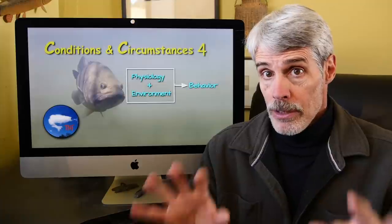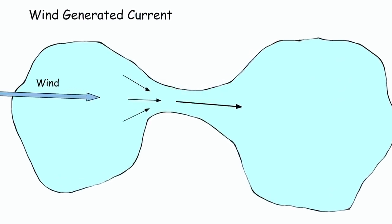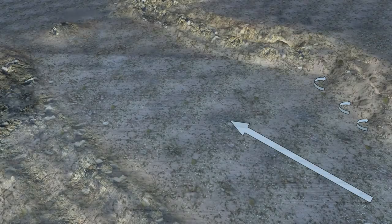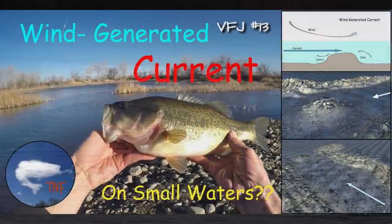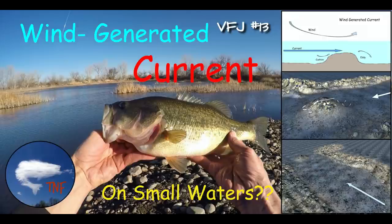Other places that may develop currents are topographic constrictions, such as canals or channels, narrows, that move water either by natural flow or wind generated. See video fishing journal number 13 for an example of how wind generated currents can greatly affect our fishing.